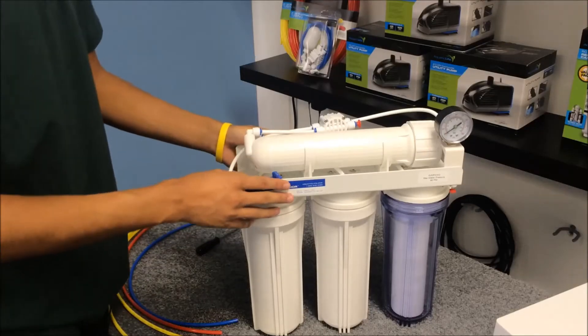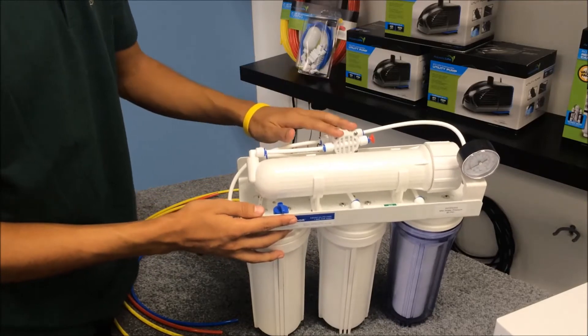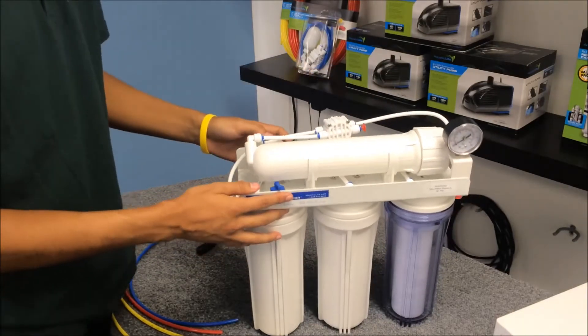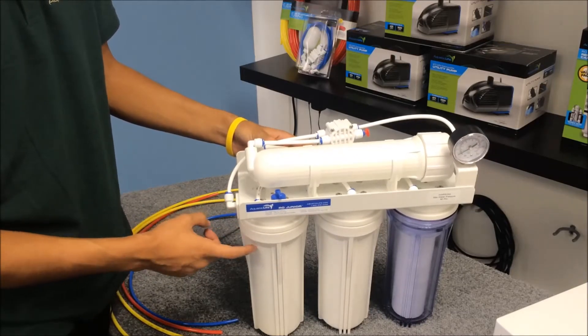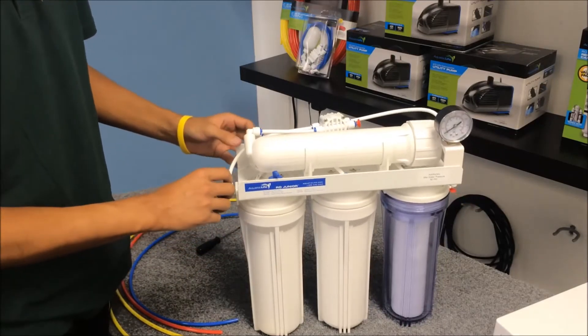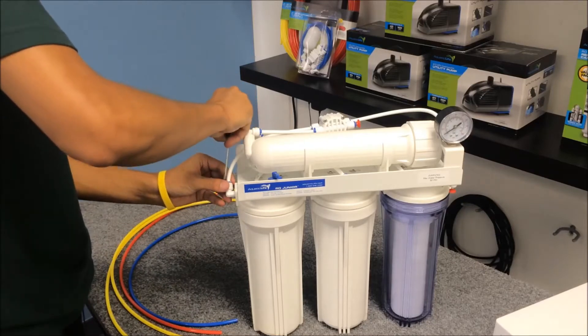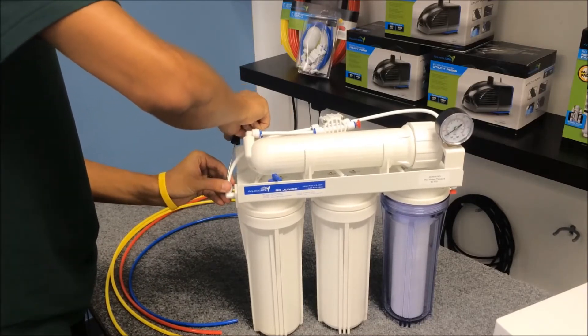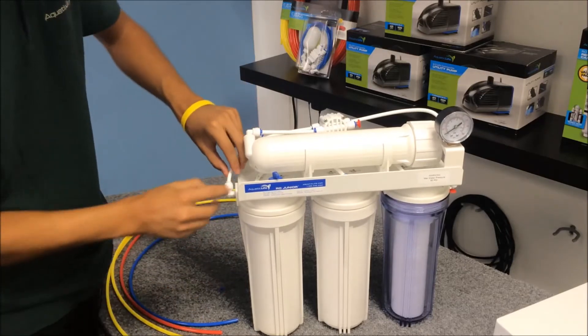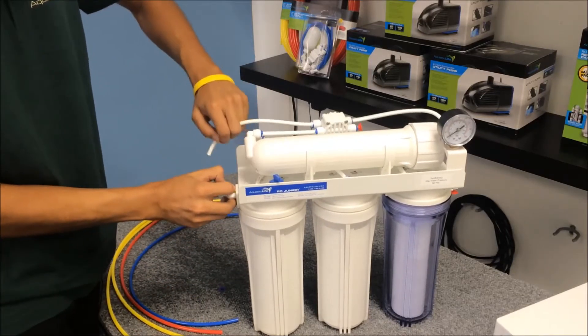So what we've got here is our RO Junior. We're going to go ahead and bypass the solenoid valve and our flow restrictor. So in order to do that, we're going to take the carbon supply, disconnect that, press the white collar down, and remove the tubing.